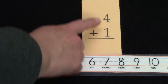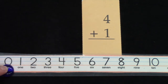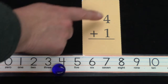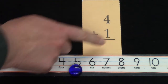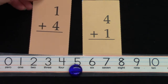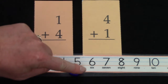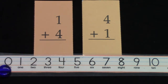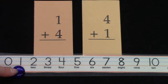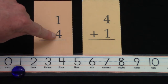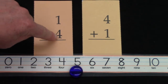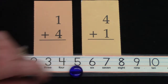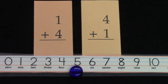Let's look at this question: 4 plus 1. We're going to move our gem 4 spaces: 1, 2, 3, 4. Plus one more. 4 plus 1 is 5. What if our question was 1 plus 4? Let's try it. We'll move our gem 1 space: 1. Plus 4 more: 1, 2, 3, 4. 1 plus 4 is 5. And 4 plus 1 is 5. They're both the same.